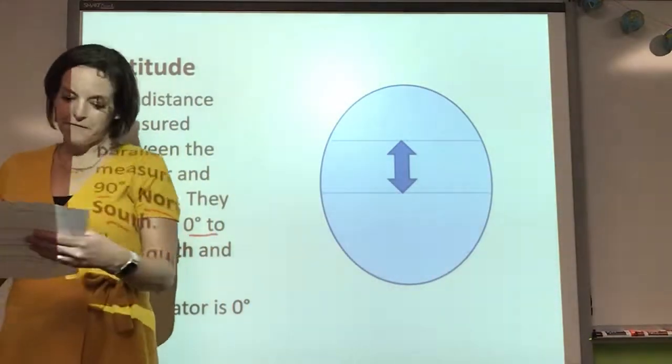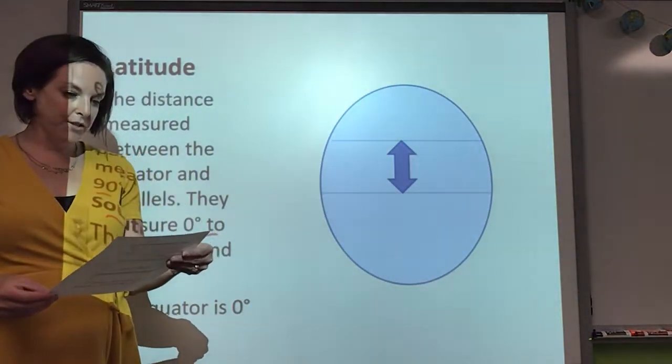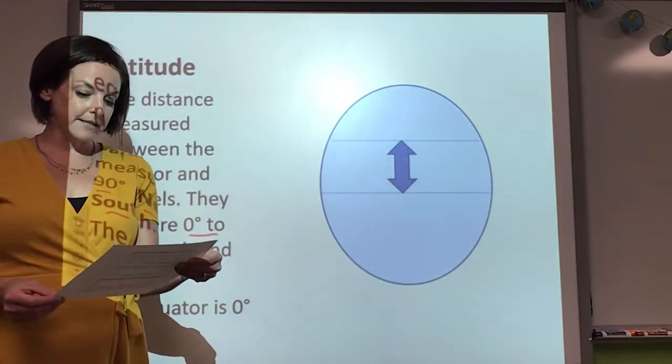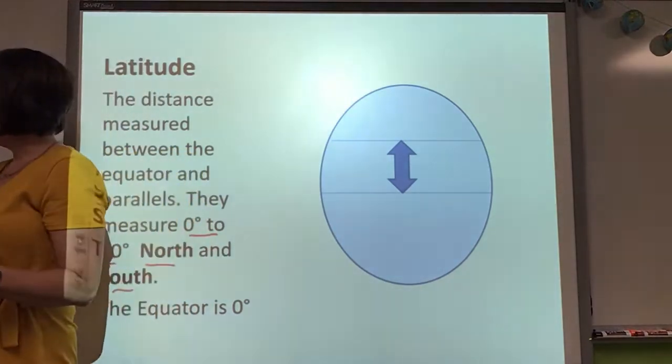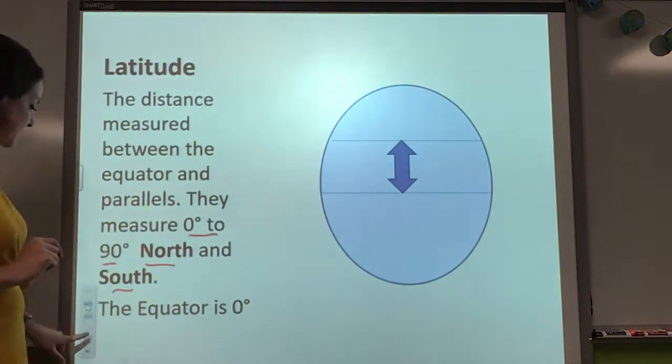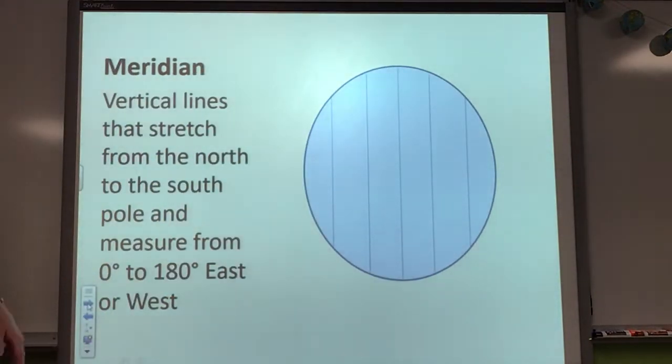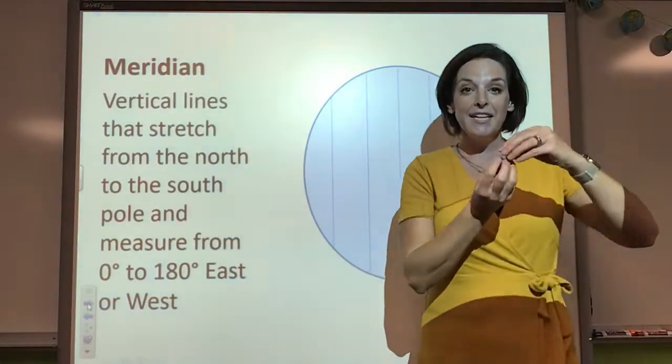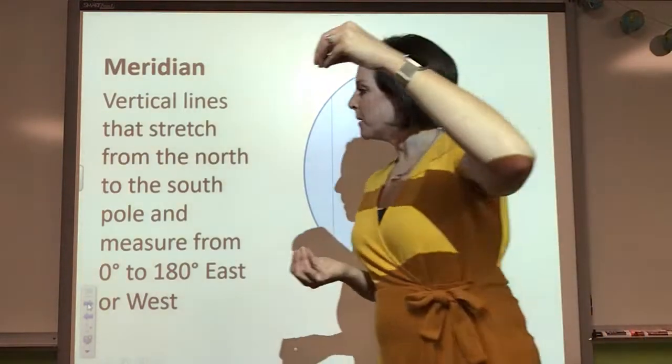So far, you should have number one filled in, number two filled in, and number three filled in. All right, moving on to number four here. These lines are called meridian.